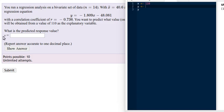So in this case we were wanting an x value of 110, our y would be minus 1.809 times the x value and minus 48.081, and execute that. Find out what the y value is. It's going to be about that much.